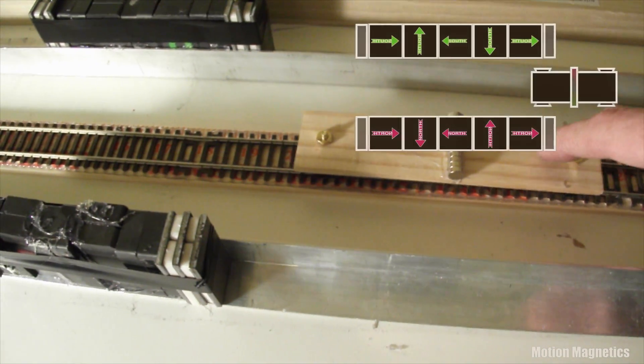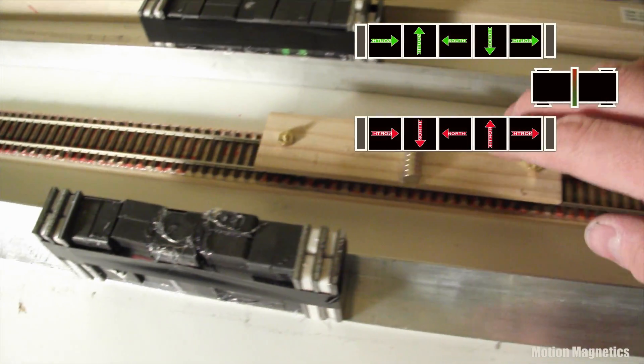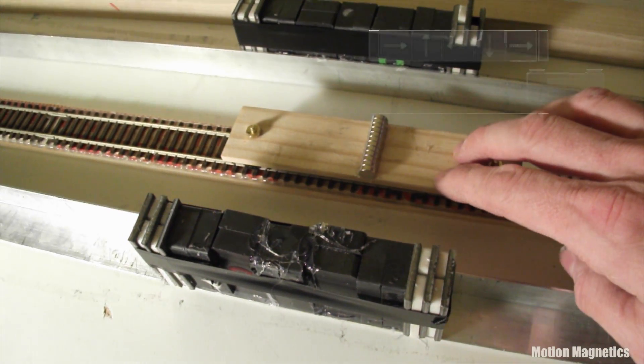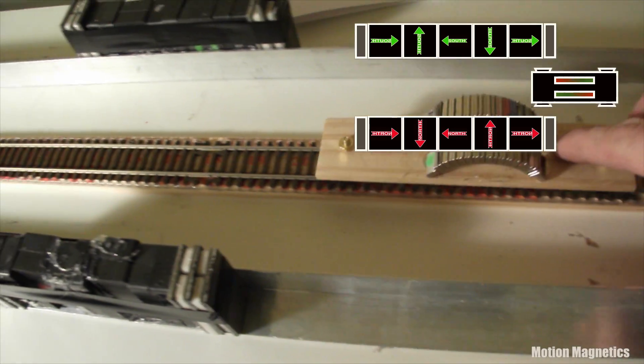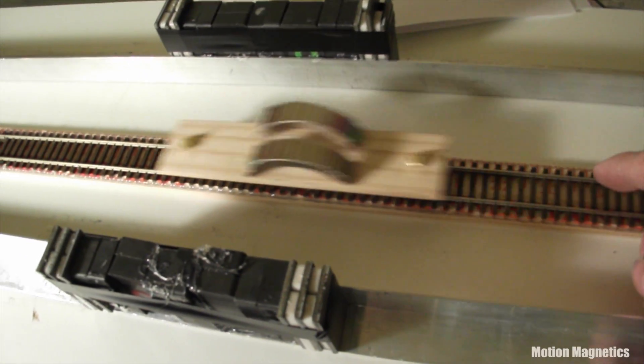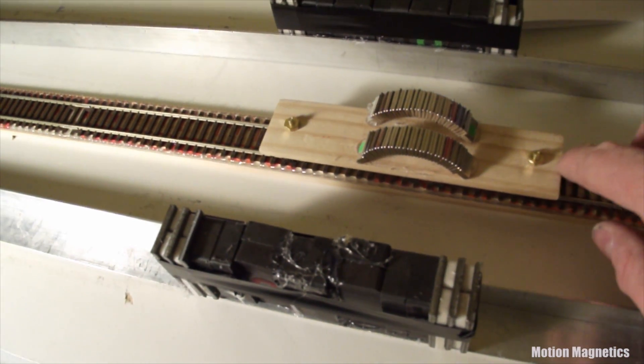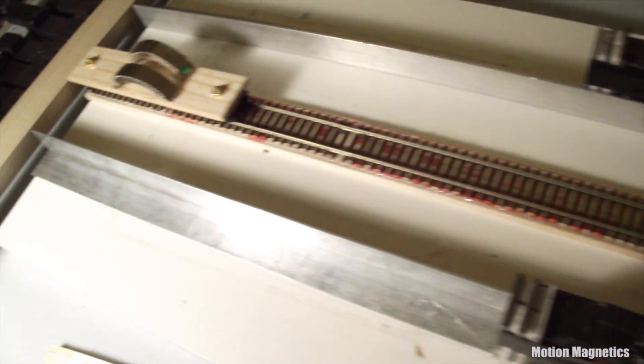The reason it's difficult to use the Halbach Array to achieve motive force is because the poles in the array flip back and forth between north and south, making it difficult for a cart or rotor to align itself properly. It simply cogs up whenever it's in an area of opposing polarity magnetic flux. That doesn't have to be the case with a steel ball though.